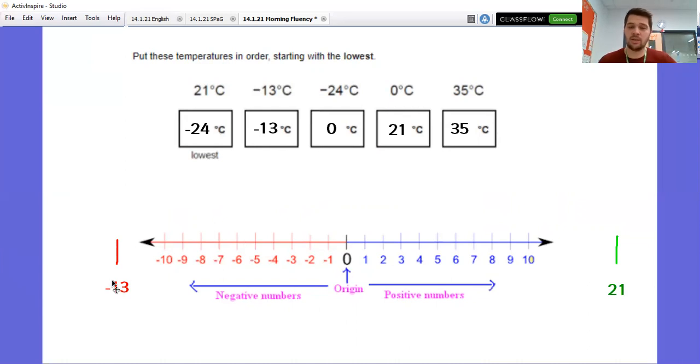And negative 13 degrees would be a little bit closer to zero. And then I could count negative 10, negative nine, right up until negative one and then zero.